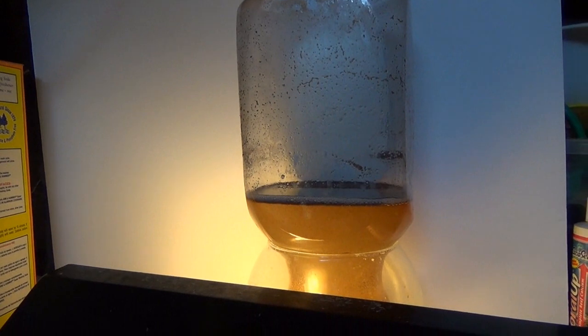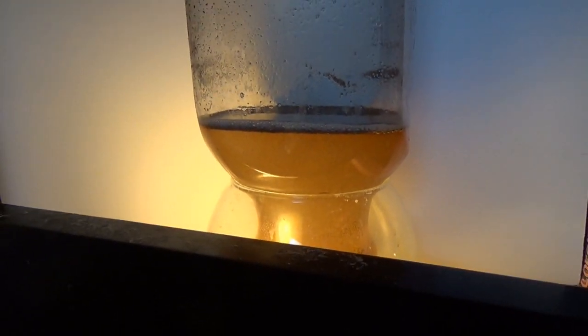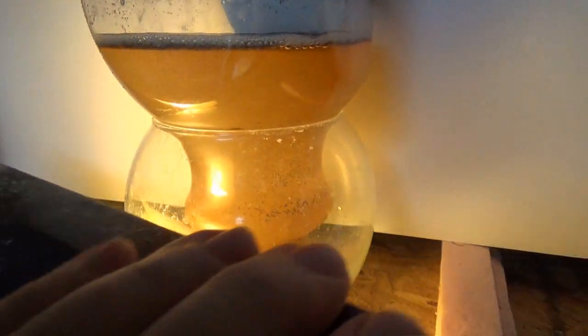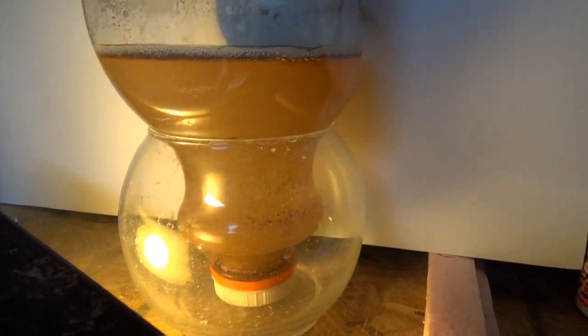This is my brine shrimp container. It's got saltwater and I put eggs in it. I've taken the airline out of the top. It sits on a glass bowl from the dollar store to hold it upright.